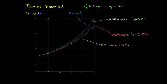So let's take an even smaller value of h. Let's take h equals 0.01. And at this point now, you can see that the green line, which corresponds to h equals 0.01, is very close to the exact solution. It's certainly significantly closer than h equals 0.05 or h equals 0.1.